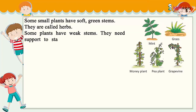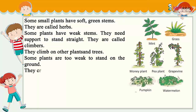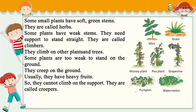Some plants have weak stems. They need support to stand straight. They are called climbers. They climb on other plants and trees. Examples include money plant, bean plant, and grape vine. Some plants are too weak to stand on the ground. They creep on the ground and usually have heavy fruits, so they cannot climb on a support. They are called creepers. Examples include pumpkin and watermelon.